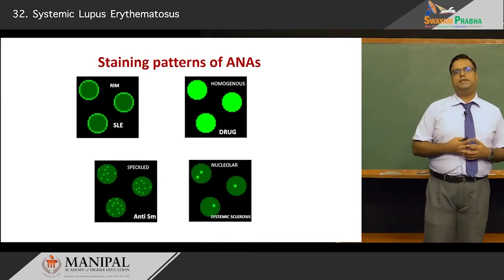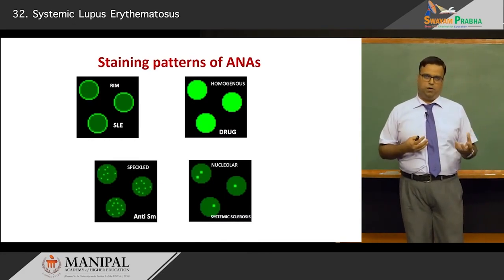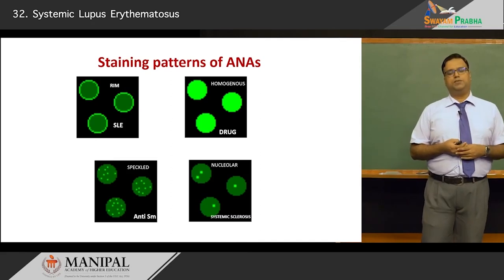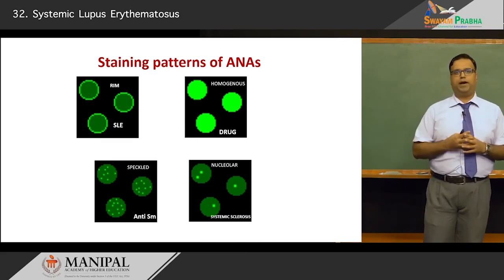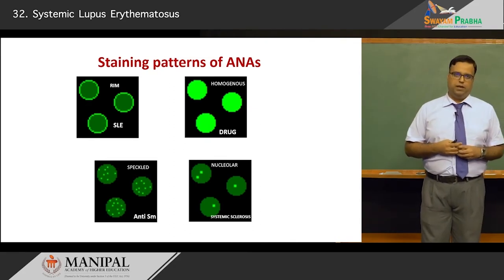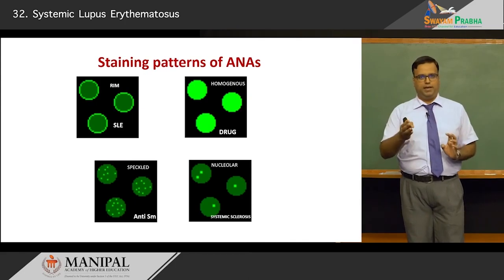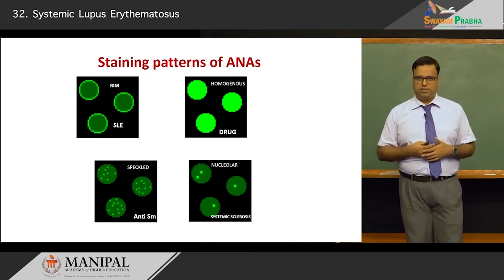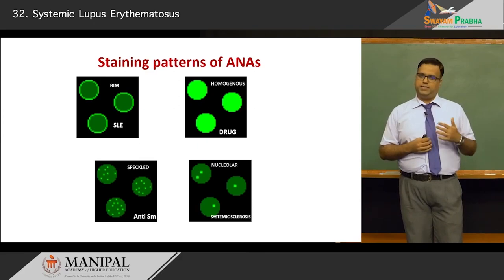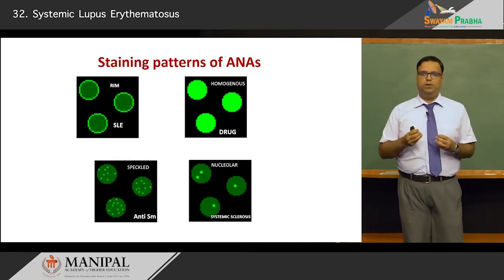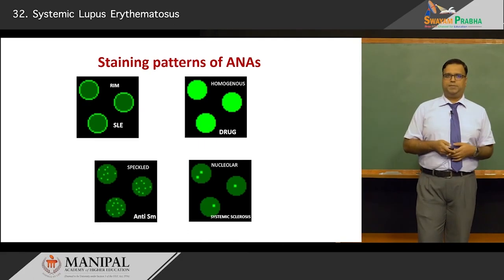The staining pattern of anti-nuclear antibodies is of relevance as it tells the pathologist the underlying disorder. The rim pattern, where antibodies are seen along the nuclear membrane, is very typical for SLE. A homogeneous staining of the entire nucleus is usually associated with drug-induced lupus. A speckled or mottled pattern relates to anti-SM and is again true for SLE. A nucleolar pattern, staining only the nucleoli within the nucleus, is seen in systemic sclerosis.